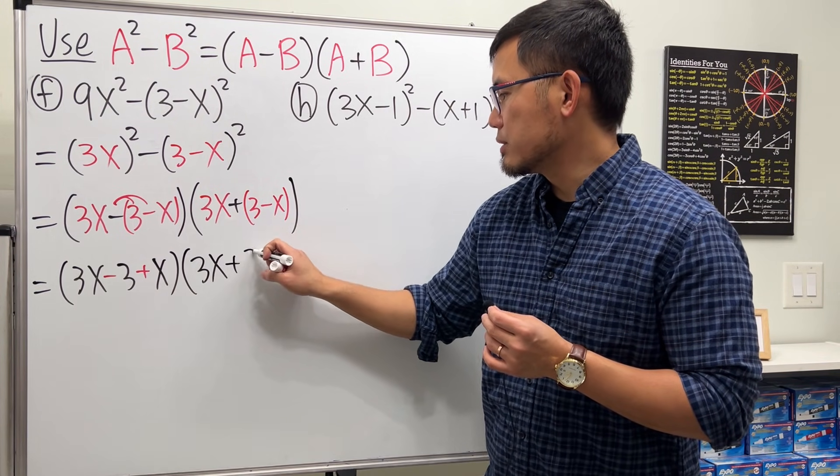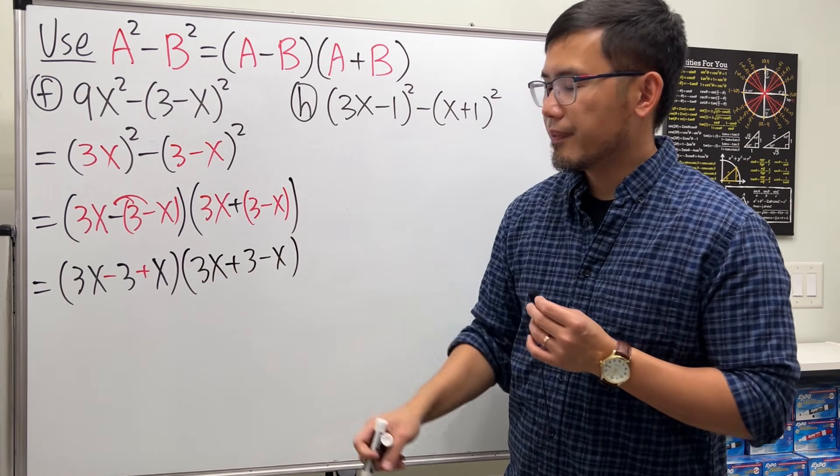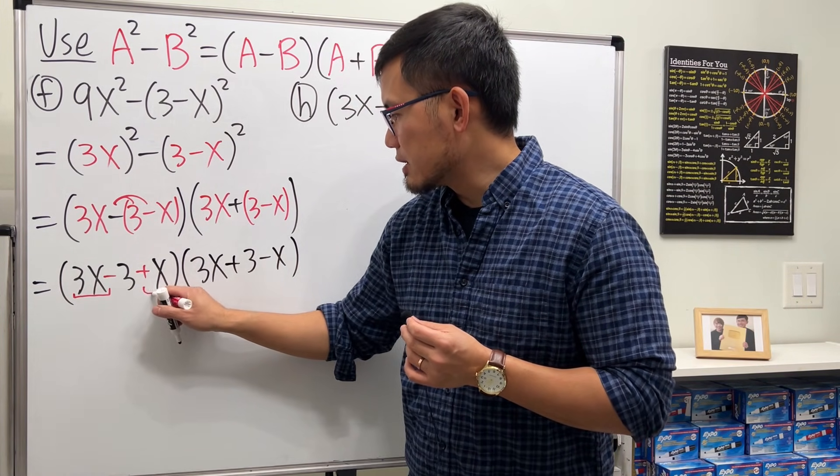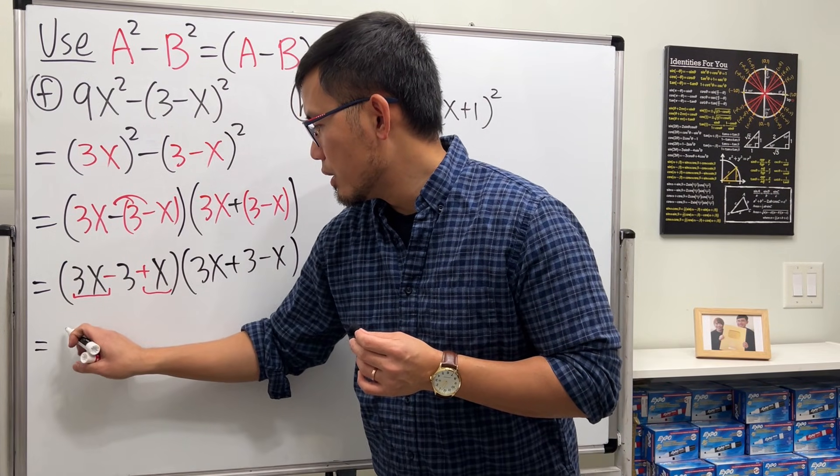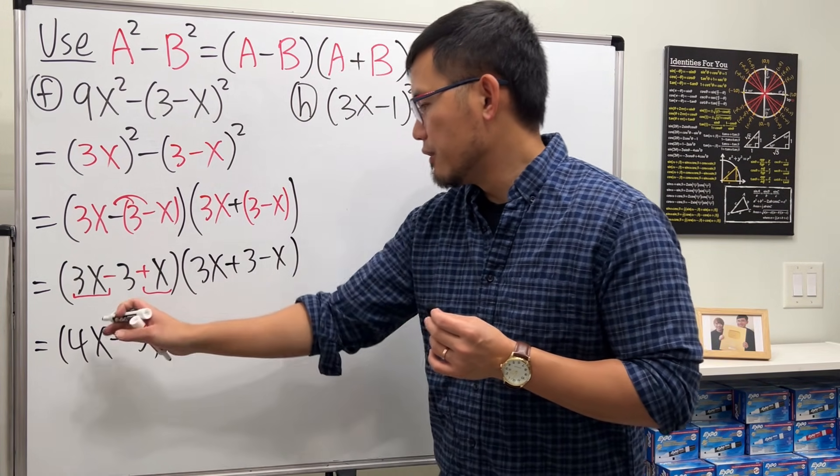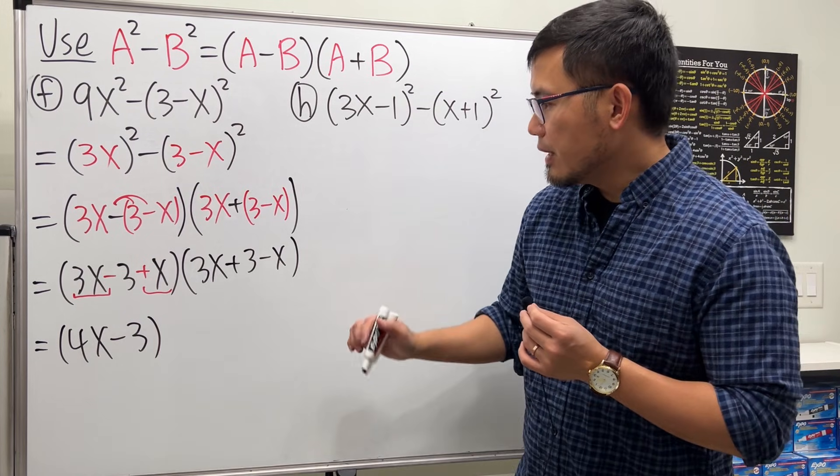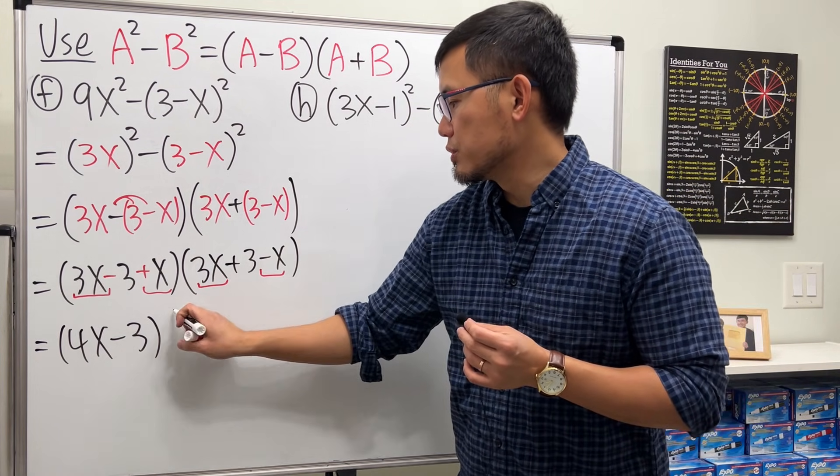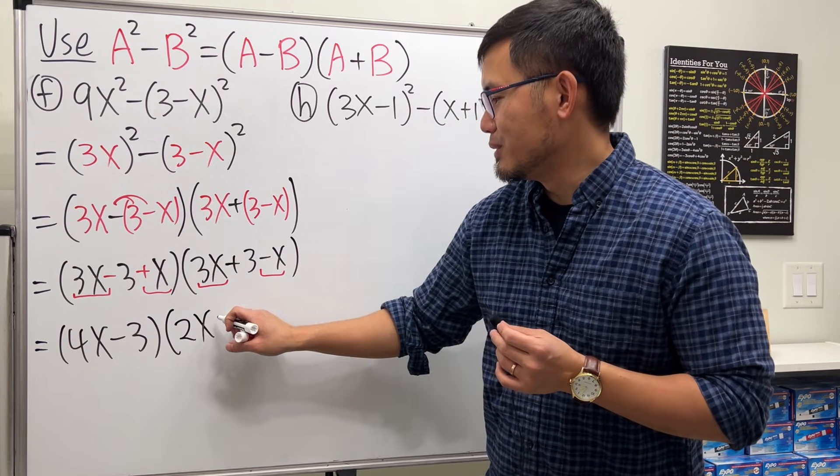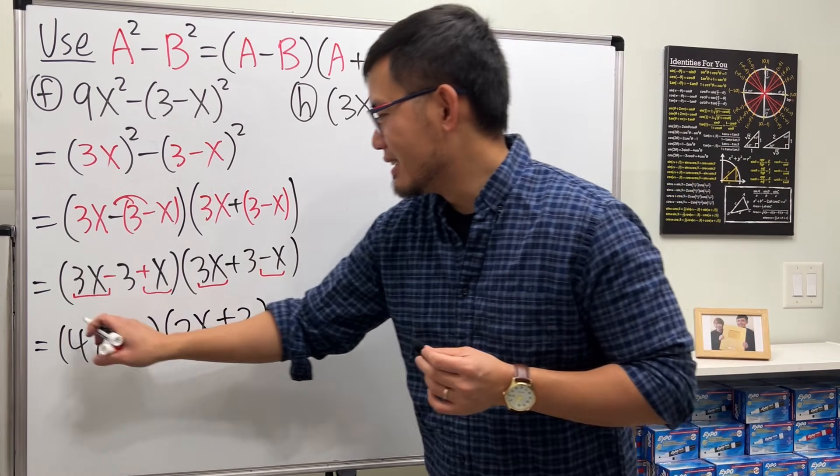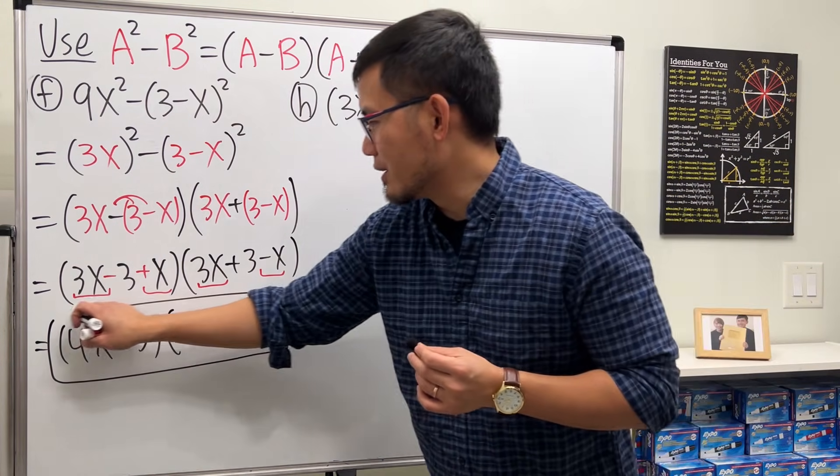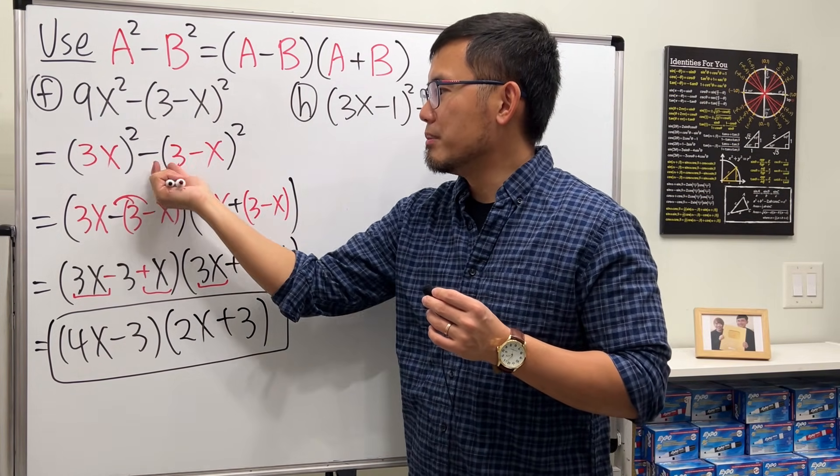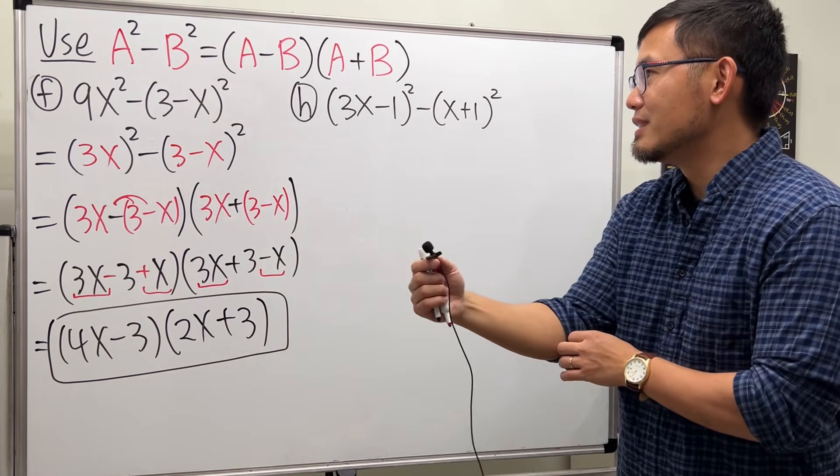For the second one, we have 3x positive times that is just that, so it's plus 3 minus x. For the first parenthesis, we see that 3x plus x, that's 4x, so 4x minus 3 for the first factor. And now for the second factor, 3x minus x, which is just 2x, and then plus 3. So that's the factoring for the first one. You always have to think about how to put this into a parenthesis square minus another parenthesis square form.